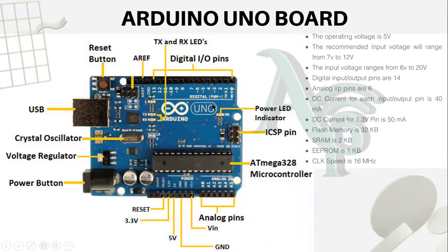The first and most common microcontroller I'm going to introduce is the Arduino UNO board. The Arduino UNO board is very common, it's cheap, and you can get it from the local market. You can actually start programming with the Arduino UNO board just by watching YouTube videos or reading PDFs on Arduino programming. There are a lot of free resources on the internet to help you start programming with Arduino UNO.